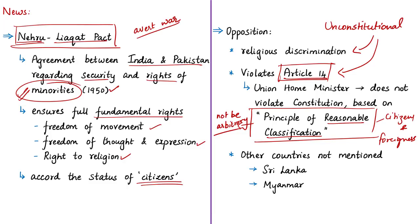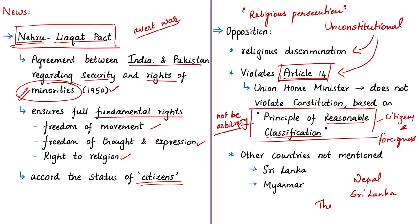Another reason for the bill's introduction is that religious persecution of minorities in neighboring countries necessitates granting citizenship to such refugees, since India has given refuge to everyone throughout history. The Home Minister added that countries like Nepal and Sri Lanka were not mentioned because they are not theocratic states — meaning systems where priests rule in the name of God — and there is no religious persecution in those countries.